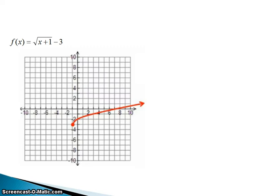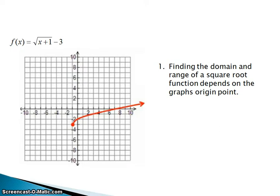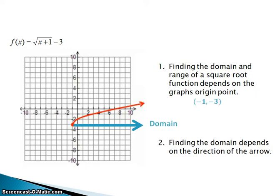Let's take a look at this next square root function: the square root of x plus 1, minus 3. Following our rules from before, we're going to find the point of origin, and we can see that it is (−1, −3). We're going to draw a thick arrow where the domain starts and going in the direction of our function. We see that it starts at negative 1 and goes on to infinity, so using interval notation, our domain is [−1, ∞).